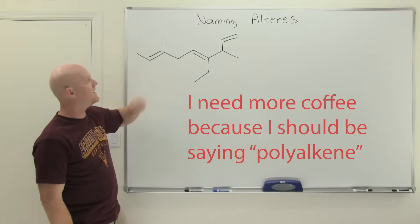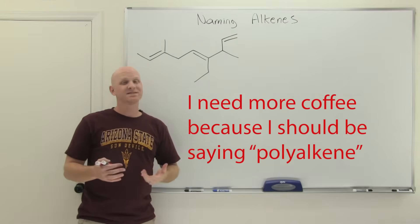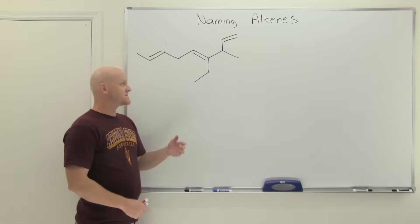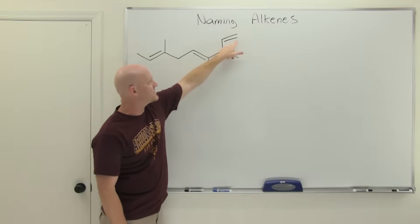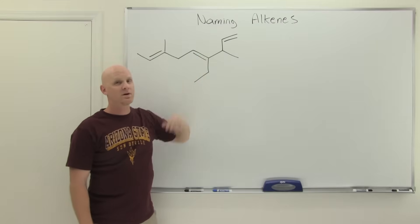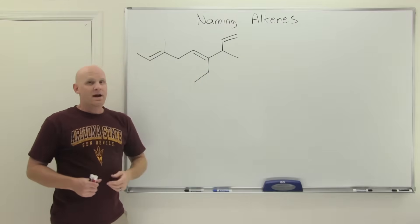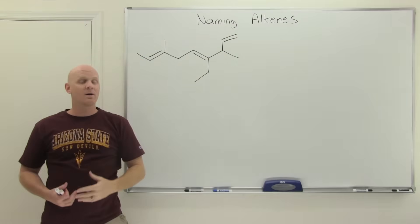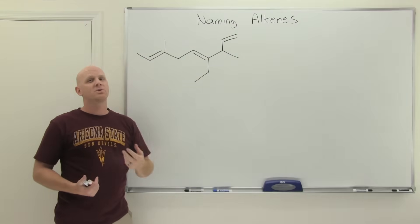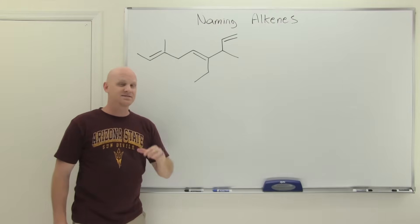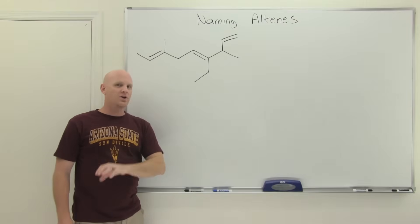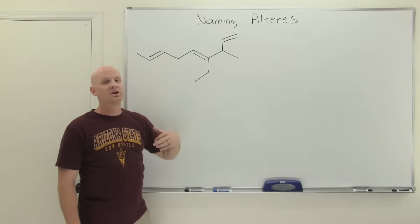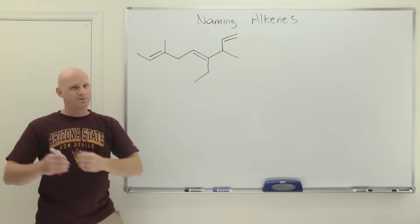For our last example, we're going to name a polyalkene. When you have a polyalkene, find the longest continuous carbon chain that contains all of the alkenes if possible. Here we get a chain that contains all three alkenes, so we call it a triene. The chain is nine carbons, so nonane becomes nonene for a single alkene, nona-diene for two, and nona-triene for three. Because diene begins with a consonant, we pull the 'a' back in: nona-diene. We'll also need chain locators.